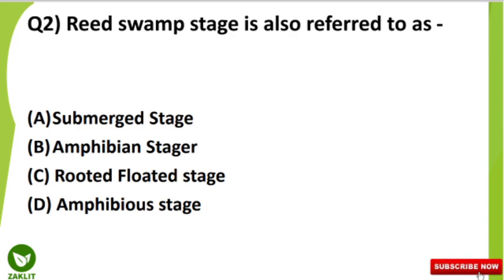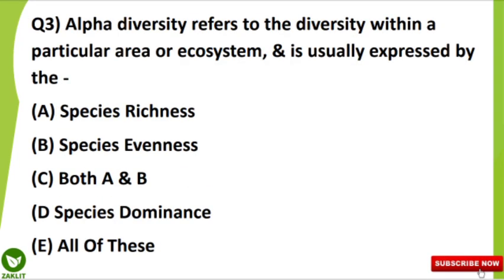Let's move to the third question. Alpha diversity refers to the diversity within a particular area or ecosystem and is usually expressed by what?